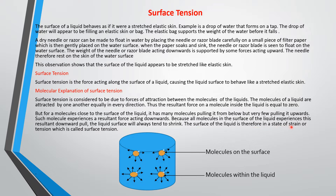The surface of the liquid is therefore in a state of strain or tension, which is called surface tension. The molecular explanation simply tells us that the molecules close to the surface of the liquid are pulled down more than they are pulled upward. Because of this, the surface of the liquid tends to shrink and is under tension, and that is why you have the experience of surface tension.